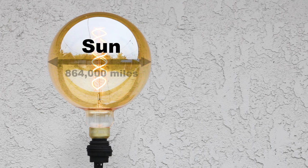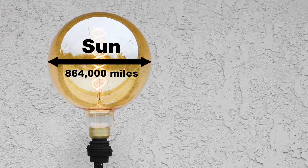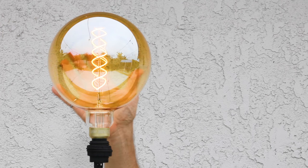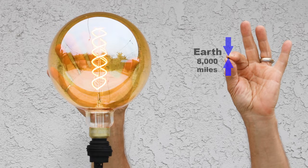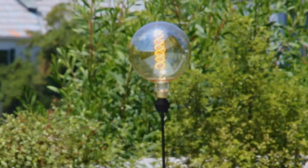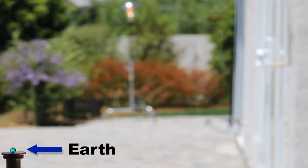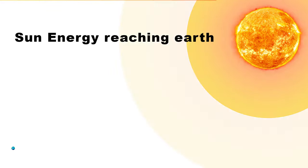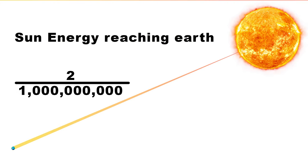Our sun is 864,000 miles in diameter and generates almost all of the energy we experience on Earth. If the sun was this size, the Earth would be the size of a peppercorn and 70 feet away. The amount of solar energy that reaches us is only two billionth of the total output of the sun.